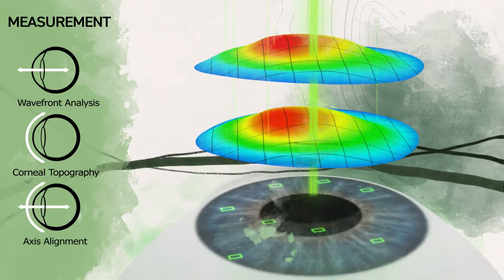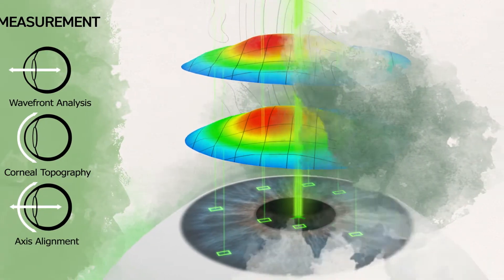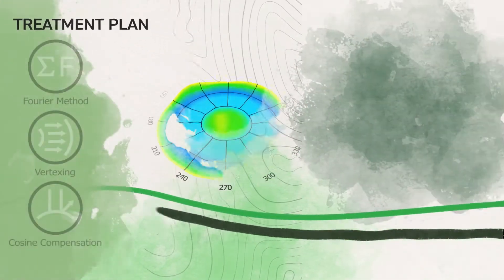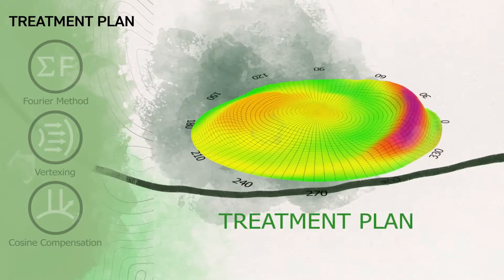By capturing an iris registration image, the system is able to precisely align the two measurements on the eye. Both of these measurements—the wavefront analysis inside and corneal topography outside—will be fully integrated into the treatment plan.